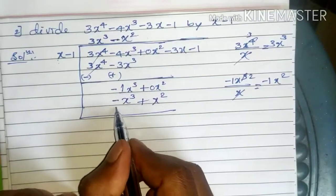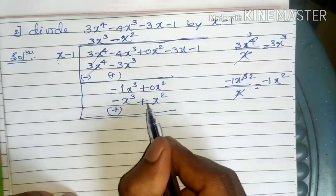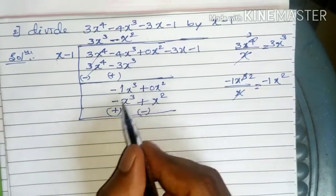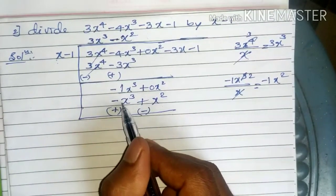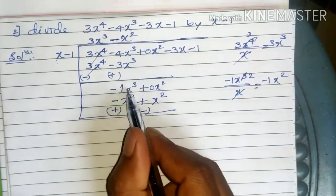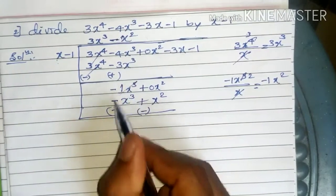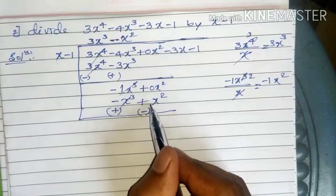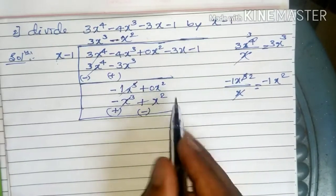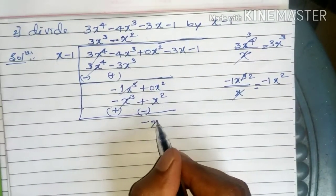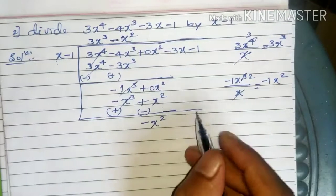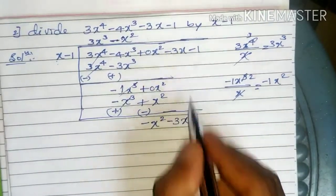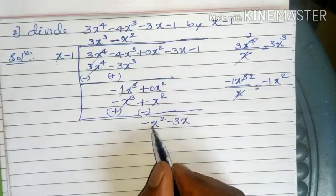After subtracting: -x³ + x³ cancels. 0x² - x² = -x². Bring down the next term -3x. Continue the process with -x² in the next step.